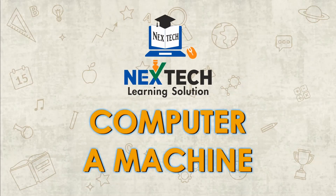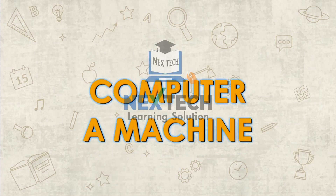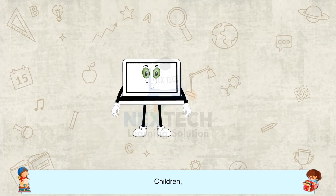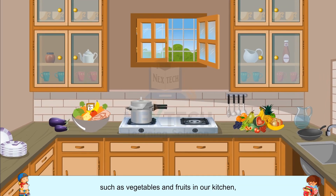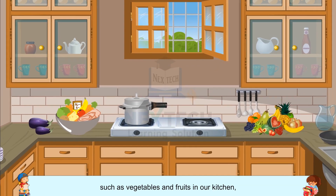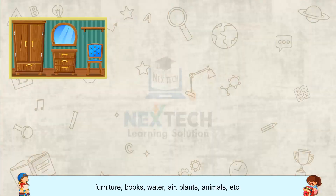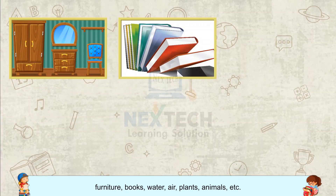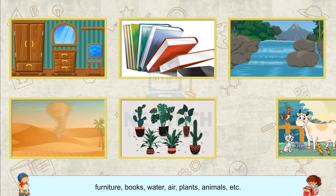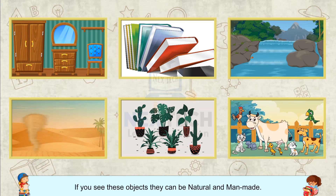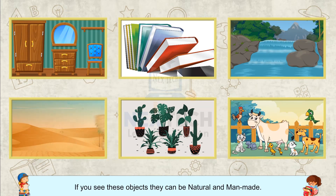Computer, a machine. Children, we all come across many things in our daily life, such as vegetables and fruits in our kitchen, furniture, books, water, air, plants, animals, etc. If you see these objects, they can be natural and man-made.